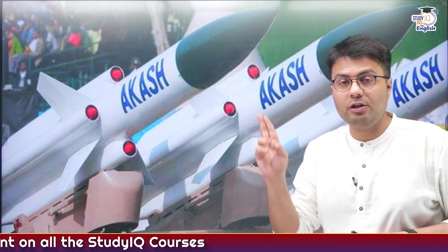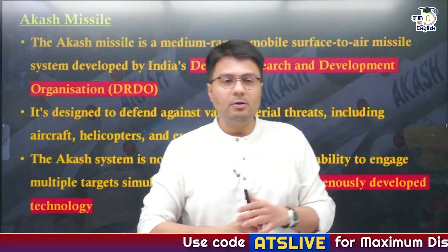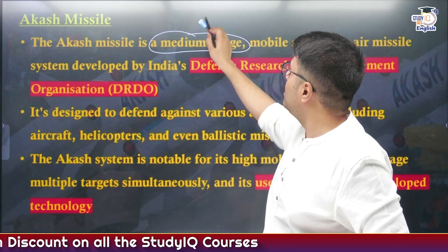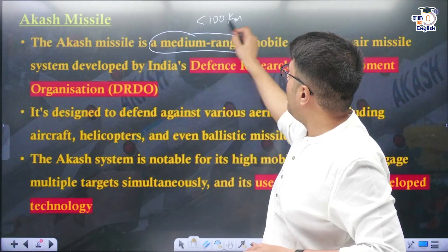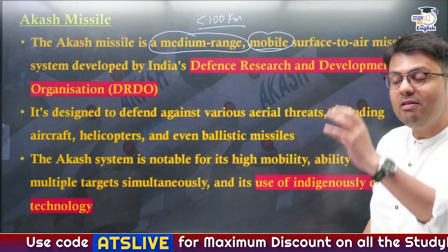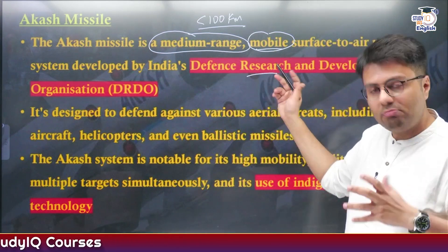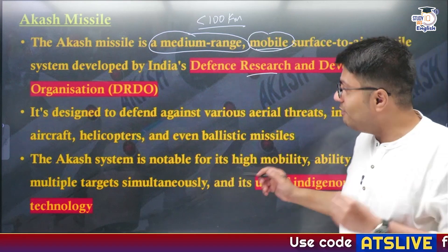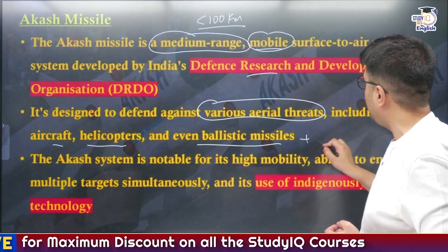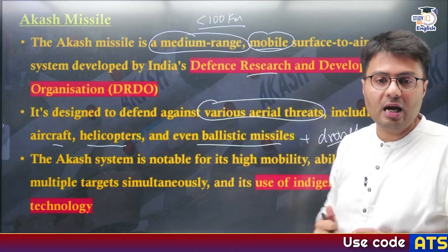The first important weapon system developed by DRDO is the Akash Missile System. It is categorized as a medium-range missile system, meaning its range is less than 100 kilometers. It has the ability to be deployed mobilically — you can deploy it on trucks and other platforms located as per the needs of the armed forces. It was designed and developed to defend against various aerial threats to India, including flying aircraft, helicopters, ballistic missiles, and even drones. To counter these kinds of aerial threats, India extensively depends on the Akash Missile System.